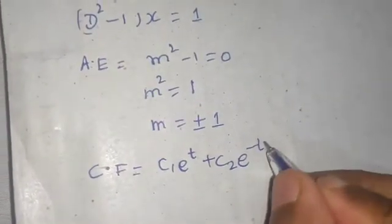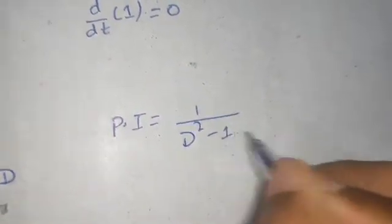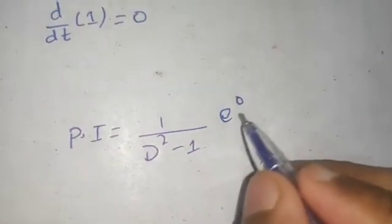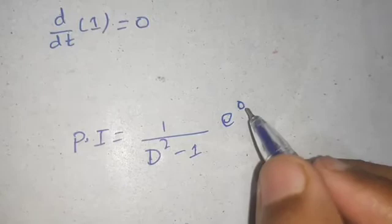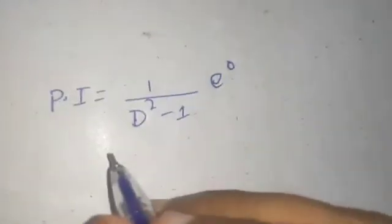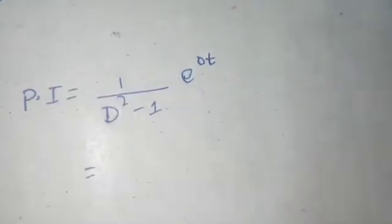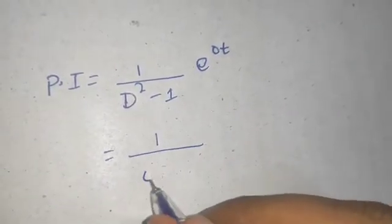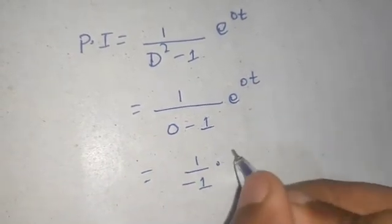For the particular integral, PI = 1/(D² - 1) operating on 1. We can write 1 as e^(0·t). Whenever we have e^(at), we replace D with a. Here a = 0, so we replace D with 0: 1/(0 - 1) · e^0 = 1/(-1) · 1 = -1. So PI = -1.